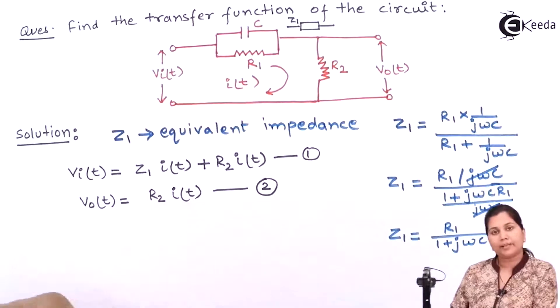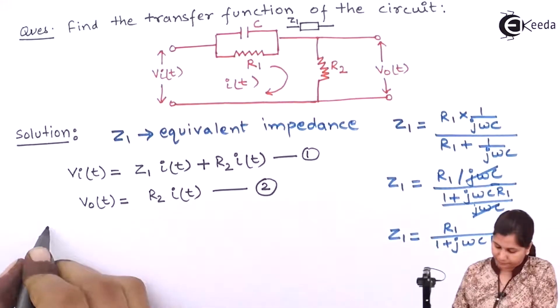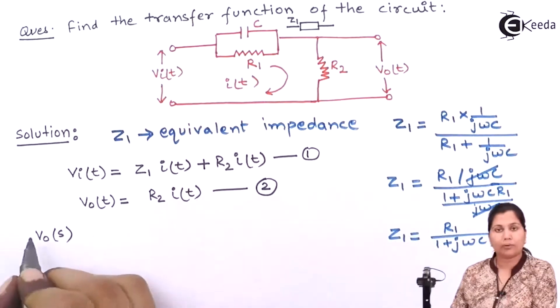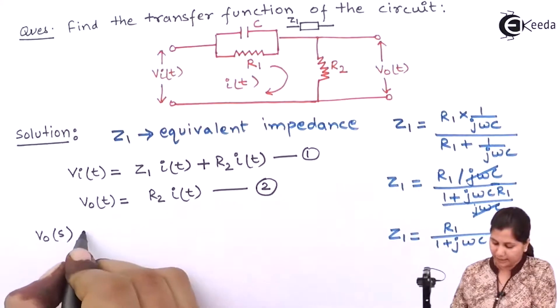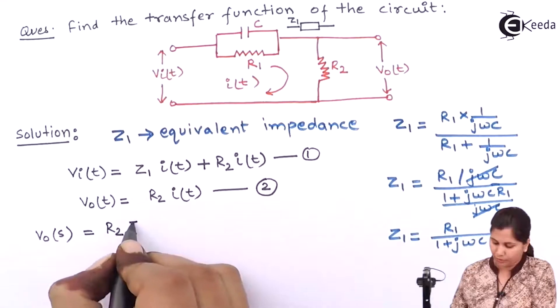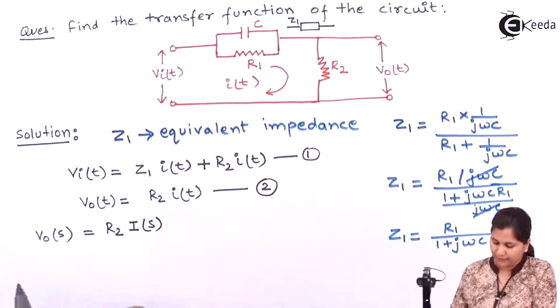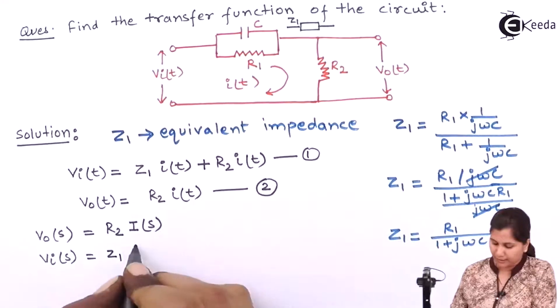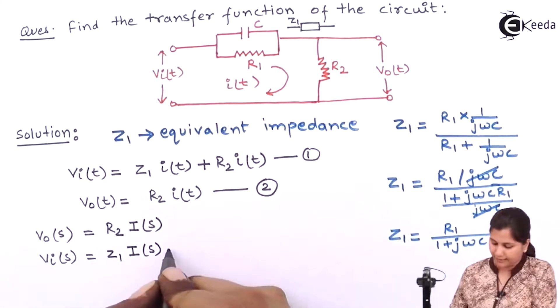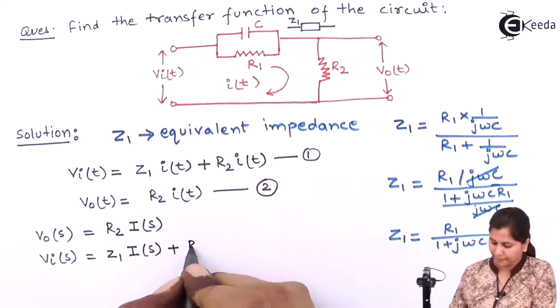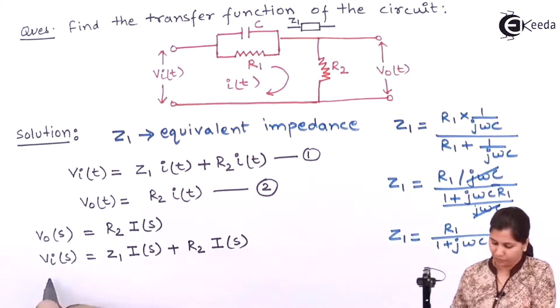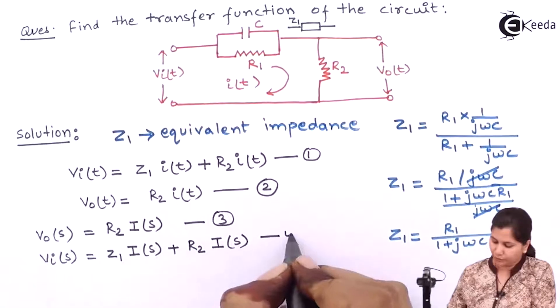Now take the Laplace transform of these two equations. The Laplace transform of the second equation will be V0(s) equals to R2 I(s). And the Laplace transform of the first equation will be Vi(s) equals to Z1 I(s) plus R2 I(s). So these are the third and the fourth equation.